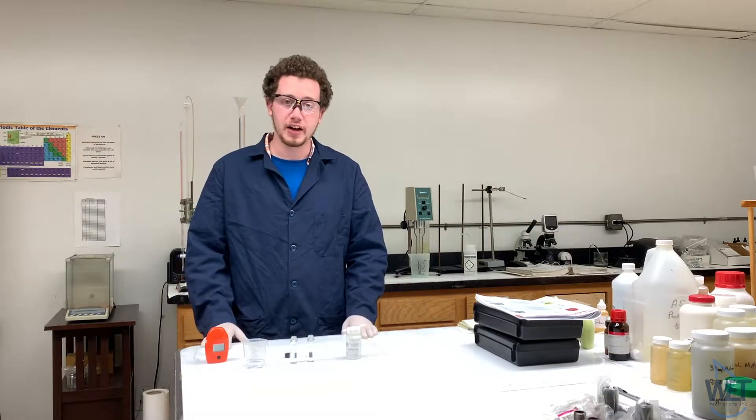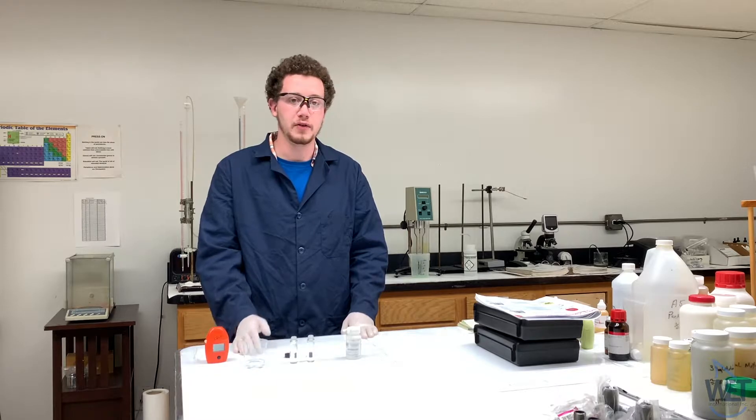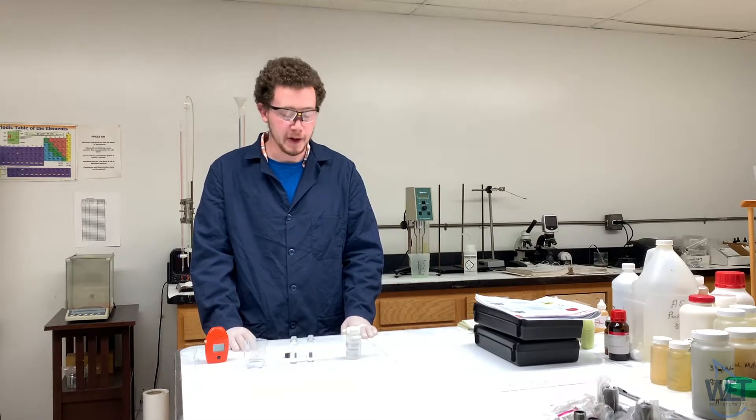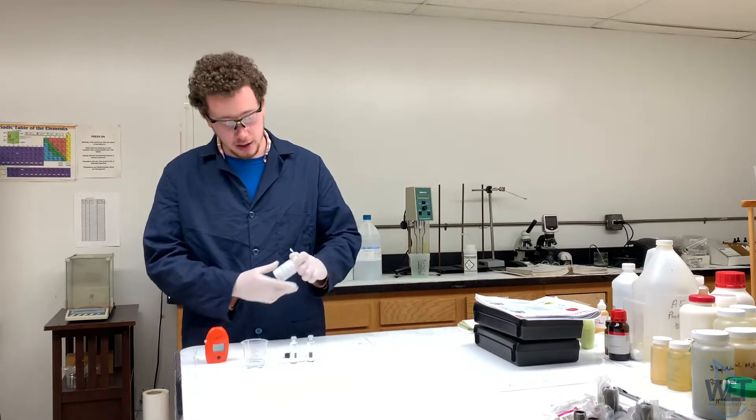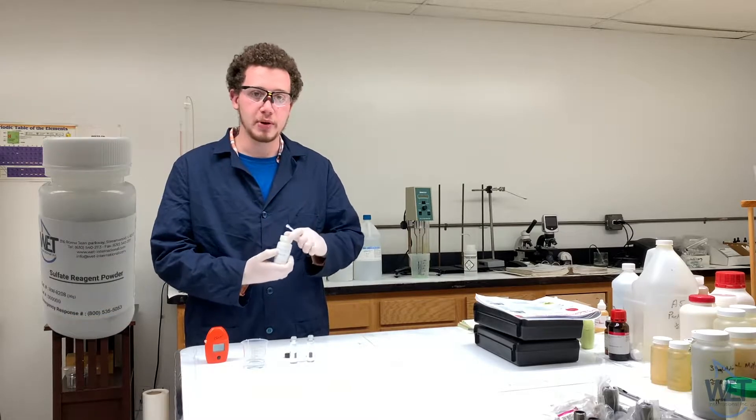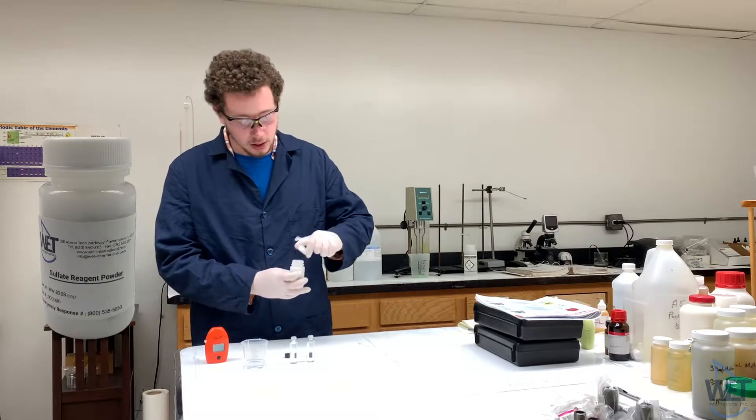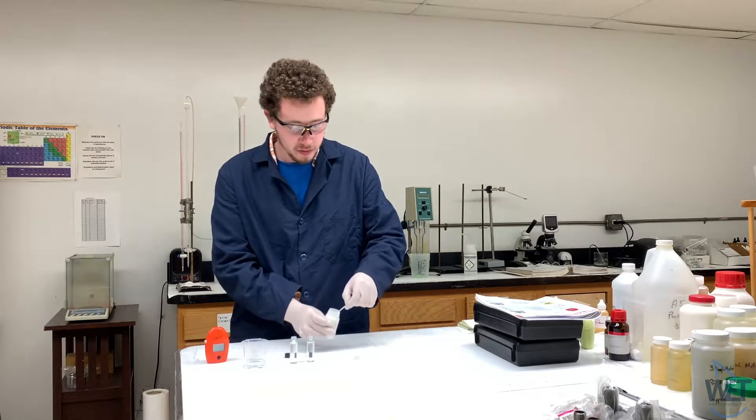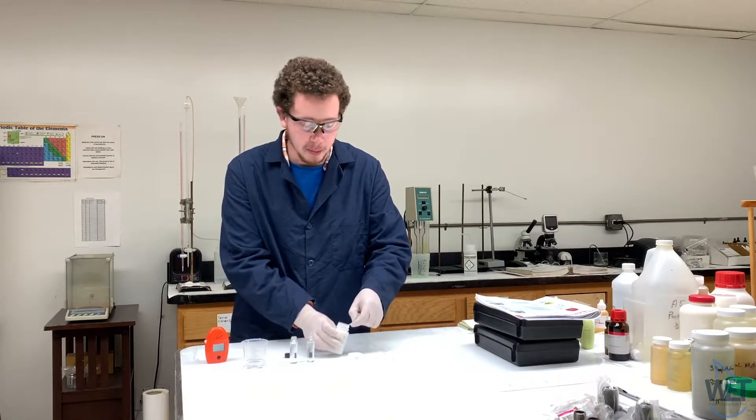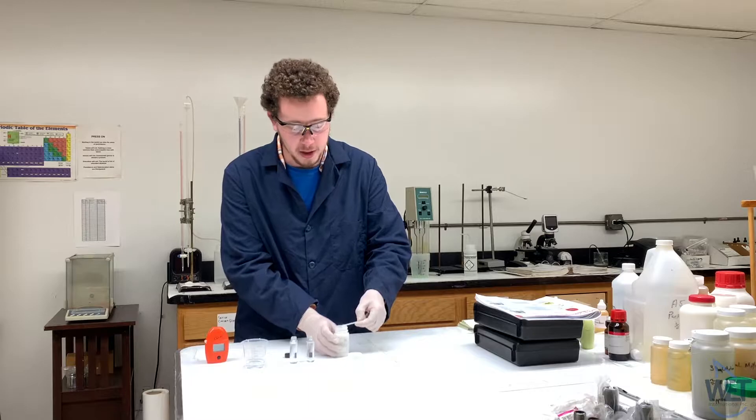This red one works at a wavelength of 525 nanometers. To test for sulfate, you'll take your sample and fill two vials to the 10 ml line. Then you will take your sulfate reagent powder and add one scoop to what will become your test sample, and the other one will remain your blank.